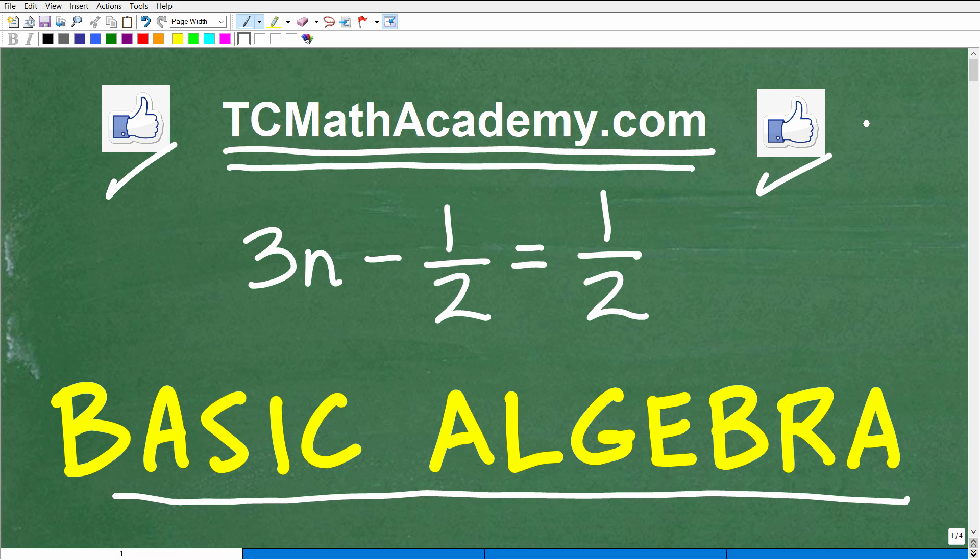Okay, so let's go ahead and take a look at the answer here. 3N minus 1 half is equal to 1 half. I forgot to tell you, don't use a calculator.